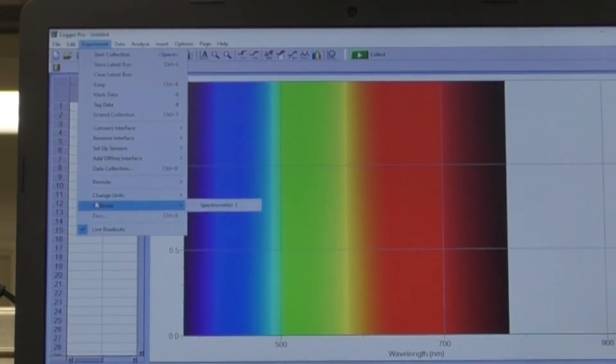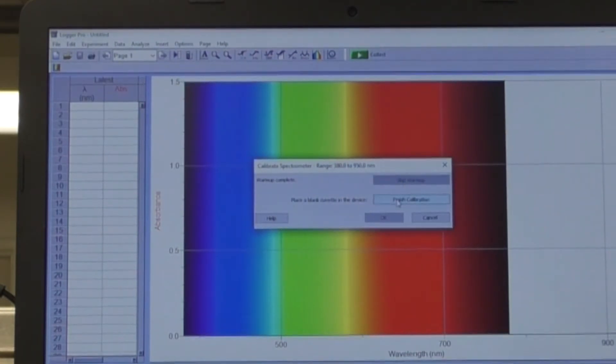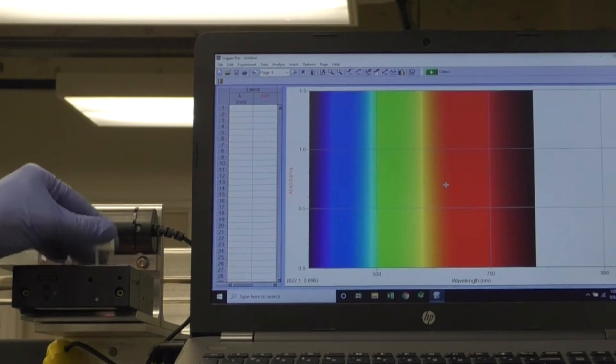Choose Experiment, Calibrate Spectrometer 1. If the spectrometer has been on, you can choose Skip Warm Up. Click Finish Calibration, then OK or Done. Place the blank back in the patient block.